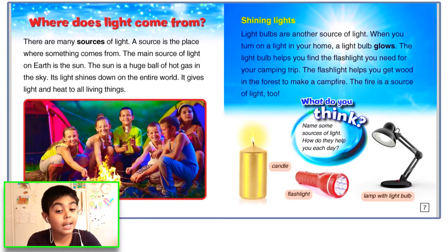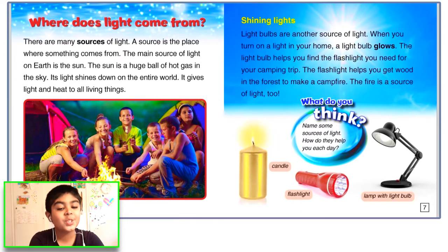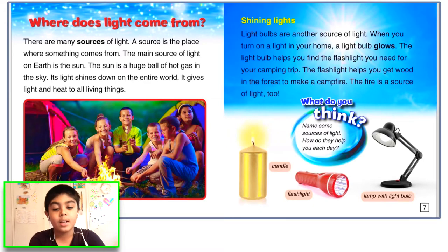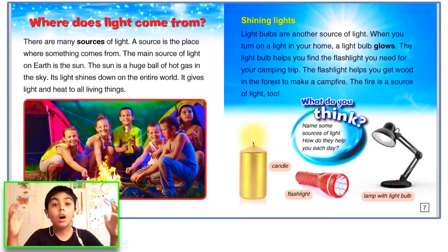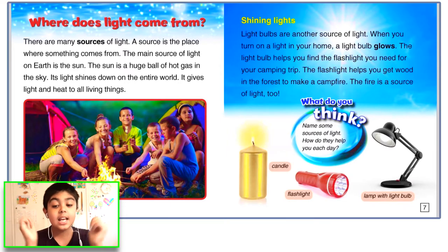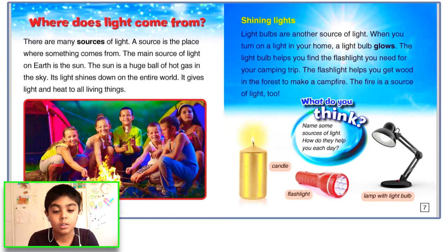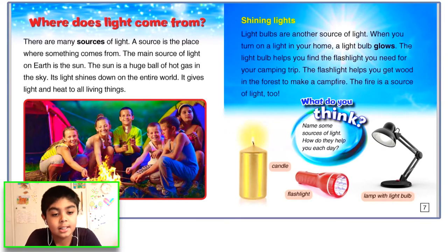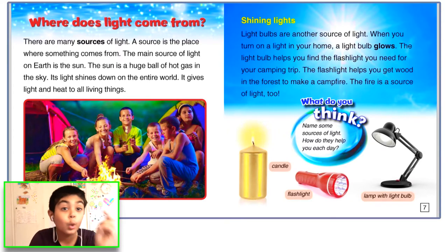Where does light come from? There are many sources of light. A source is the place where something comes from. The main source of light on earth is the sun. The sun is a huge ball of hot gas in the sky. Its light shines down on the entire world. It gives light and heat to all living things.